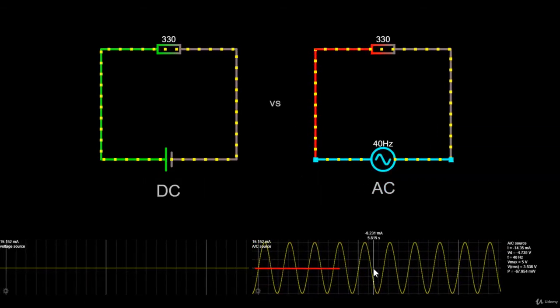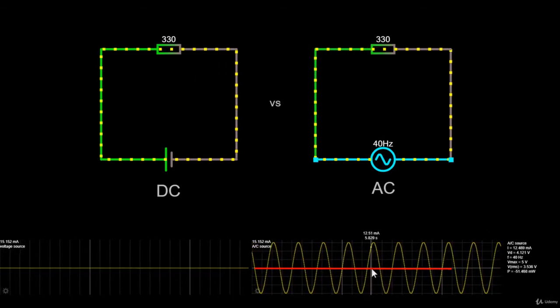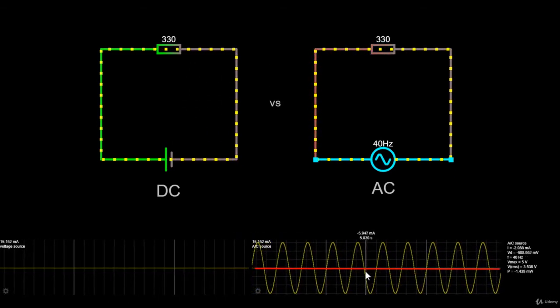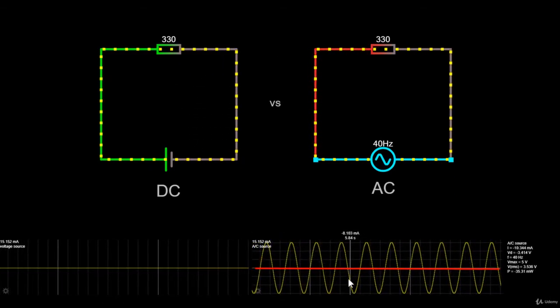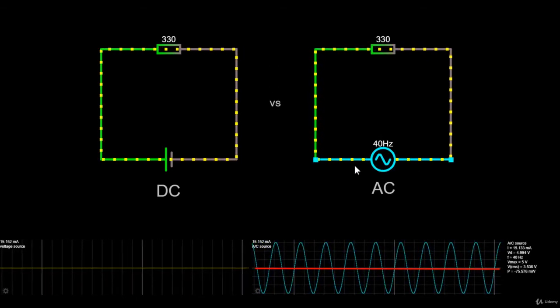So the zero line is here, and the moment the current passes this zero line and goes towards negative, the flow of current will be reversed.